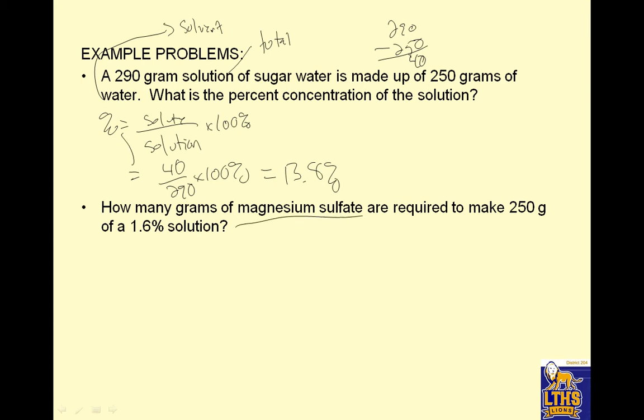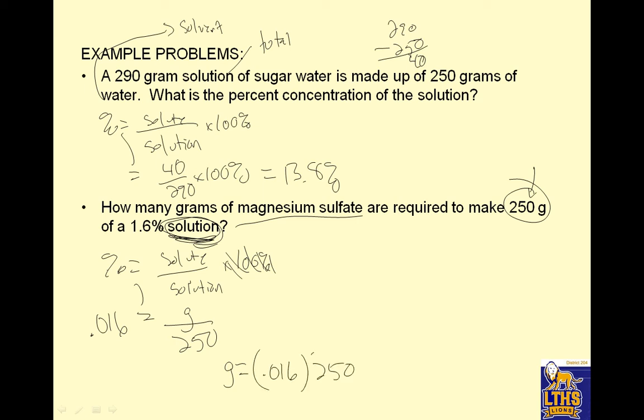How many grams of magnesium sulfate are required to make 250 grams of a 1.6% solution? That 250 grams is the solution. So percent equals solute over solution times 100%. I'm making 250 grams of solution, so 250 goes here. I'm going to ignore this part by changing my 1.6 to 0.016. I want to find grams of solute, so I'll call that G. Cross multiply: G equals 0.016 times 250, and that is 4 grams of solute.